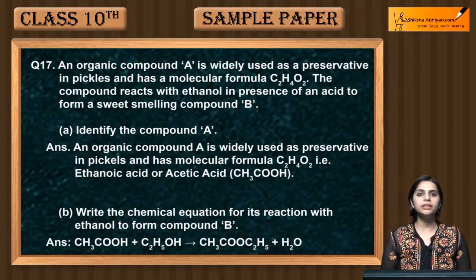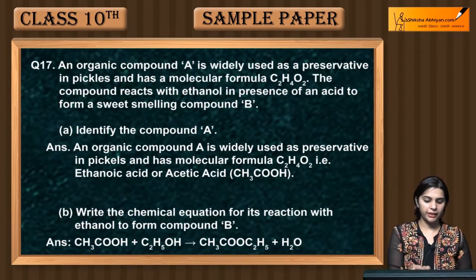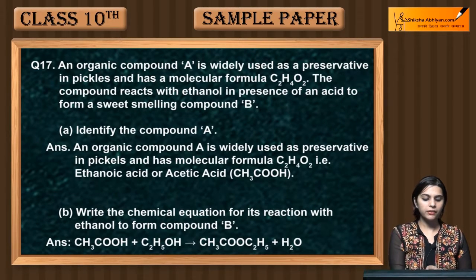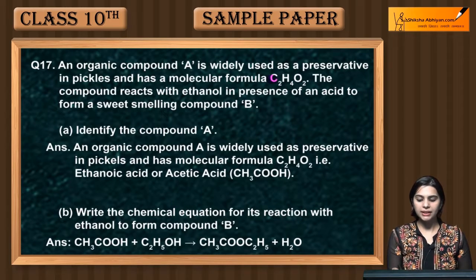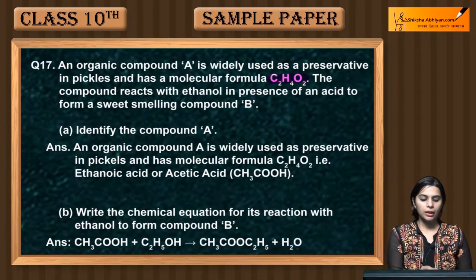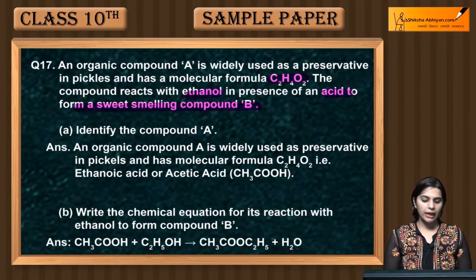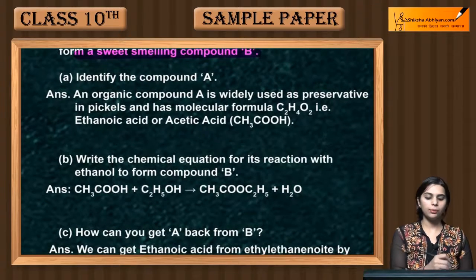Hello students, our next question is question number 17. An organic compound A is widely used as a preservative in pickles and has a molecular formula C2H4O2. The compound reacts with ethanol in the presence of an acid to form a sweet smelling compound B. Identify compound A.